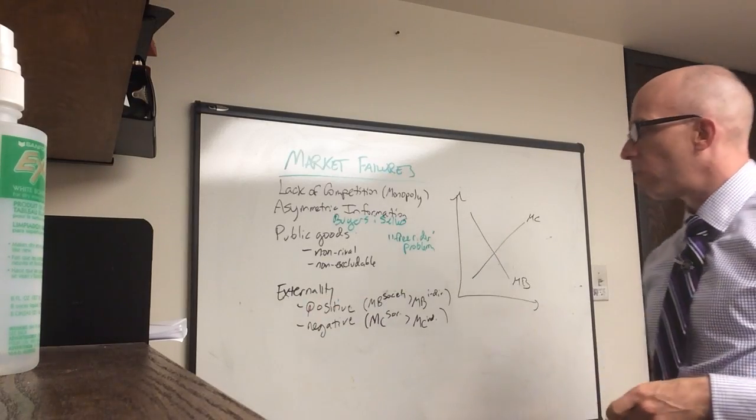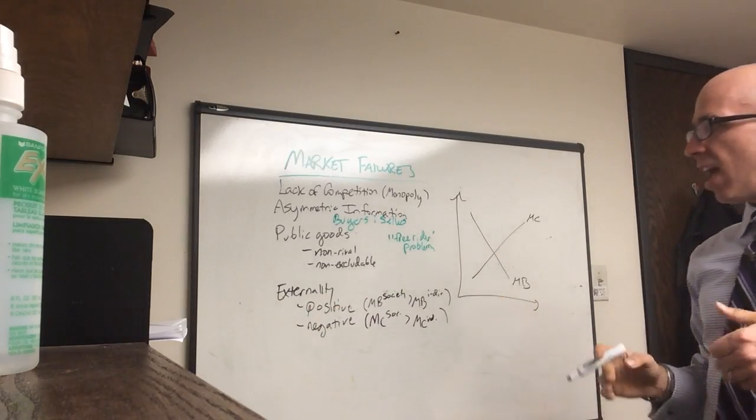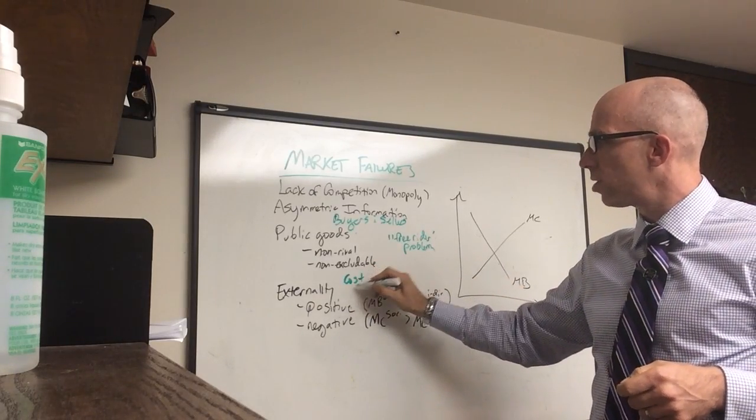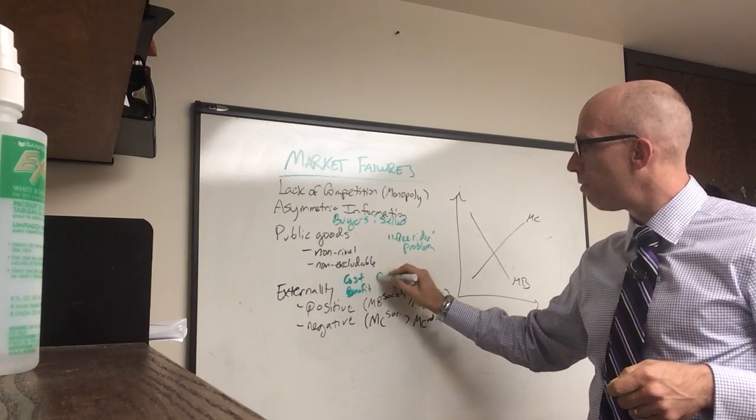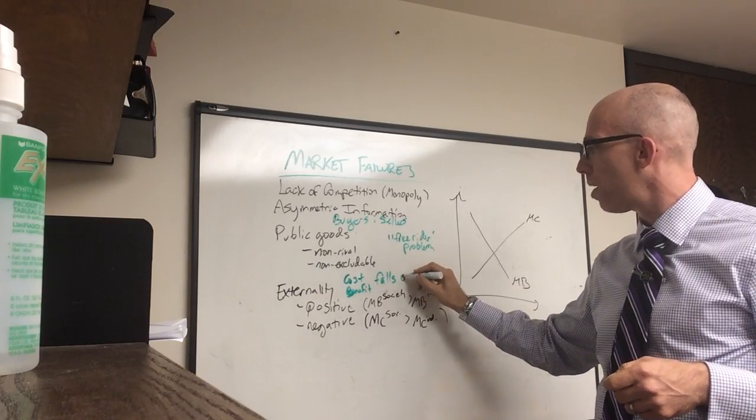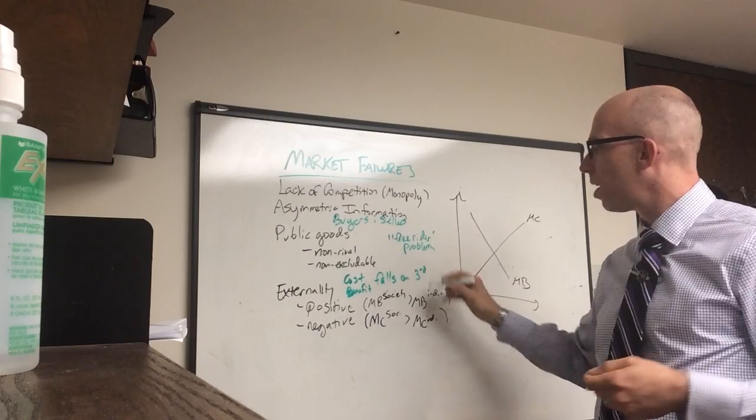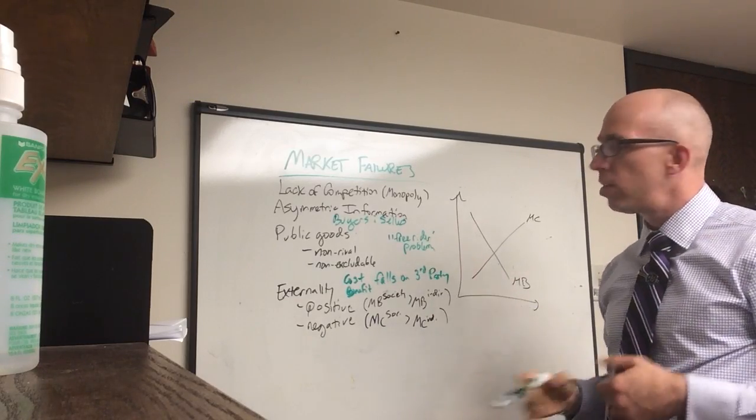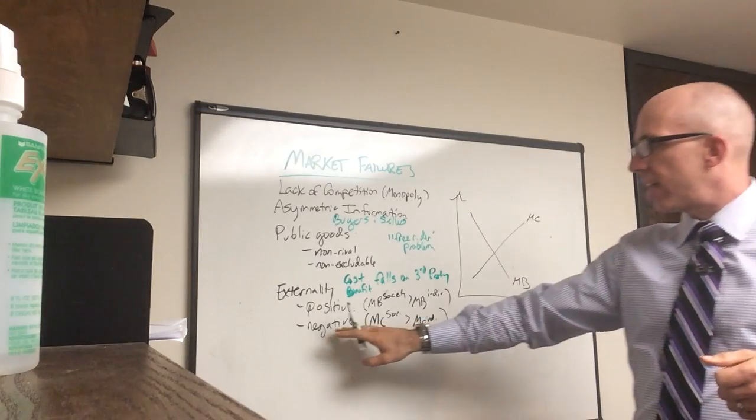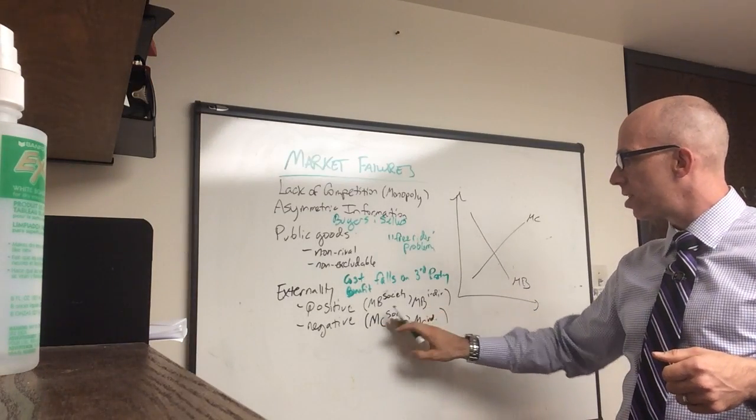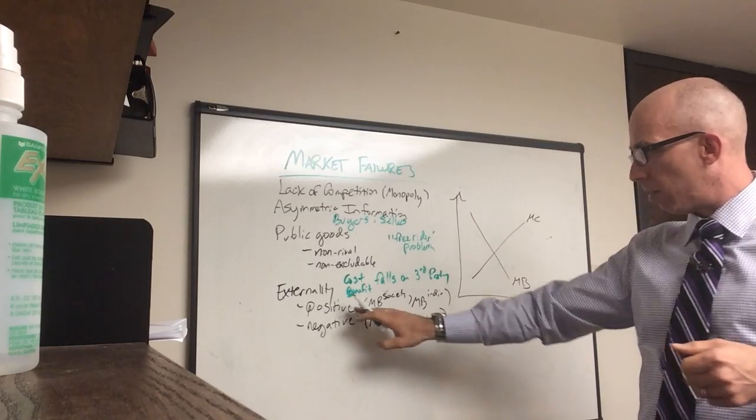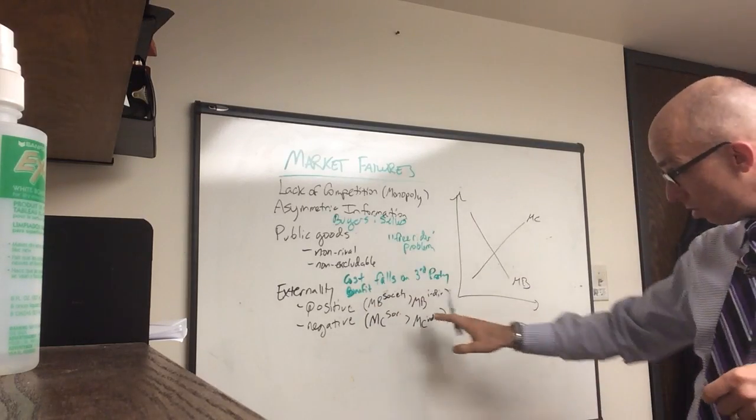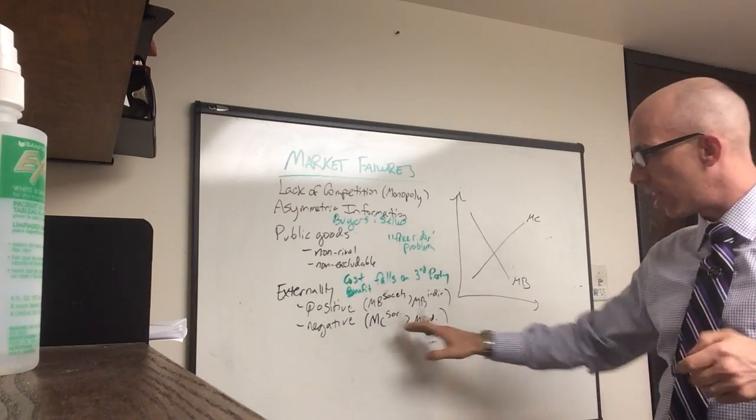Now the externality is the fourth one I want to do, and this one I'm actually going to graph. An externality is when the cost or benefit falls on someone else. So the cost or benefit falls on what's called a third party. Now a third party is someone outside or external. There's two types of this. Negative externalities when the cost for society is higher than the cost of the individual, and here positive is when the benefit for society is higher than the benefit of the individual. In this case there's an extra benefit and here's an extra cost.